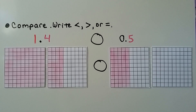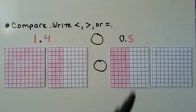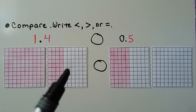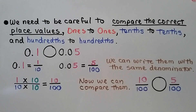We need to compare and write less than, greater than, or equal to. We have one and four tenths shaded across two grids, and on the other side we have five tenths across two grids. We can see the first pair has a greater amount of shaded parts, so one and four tenths is greater than five tenths.